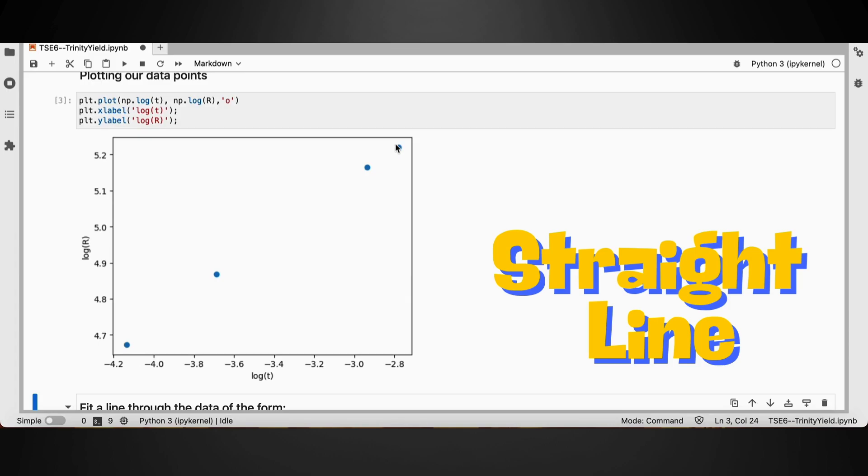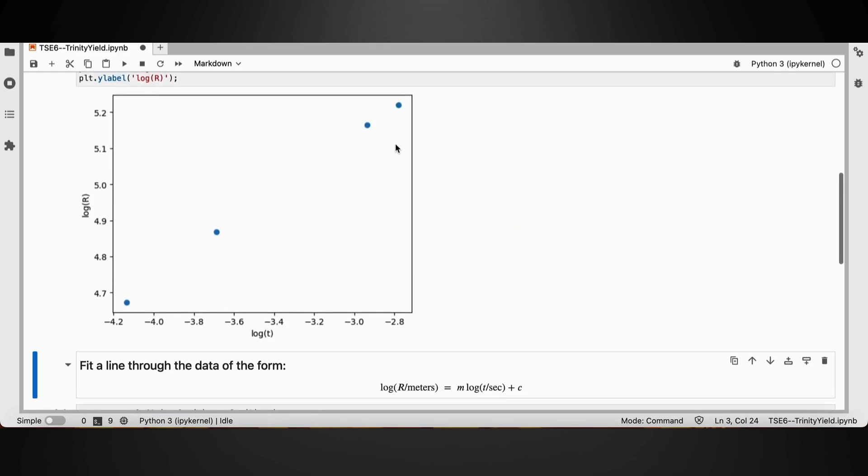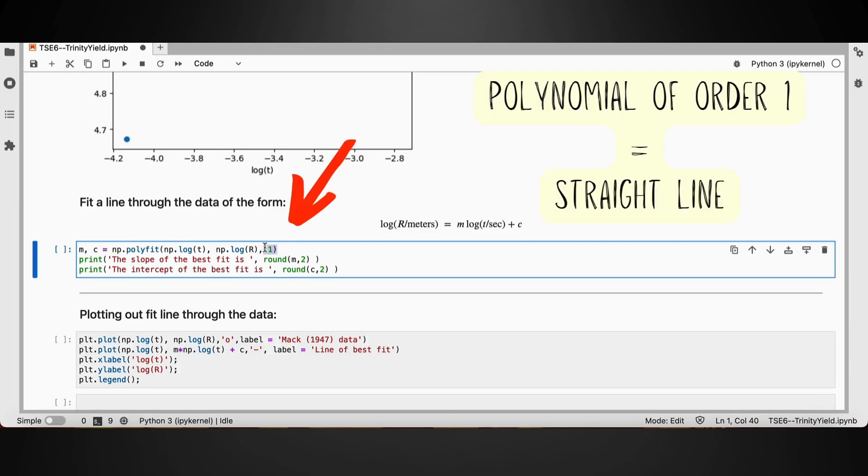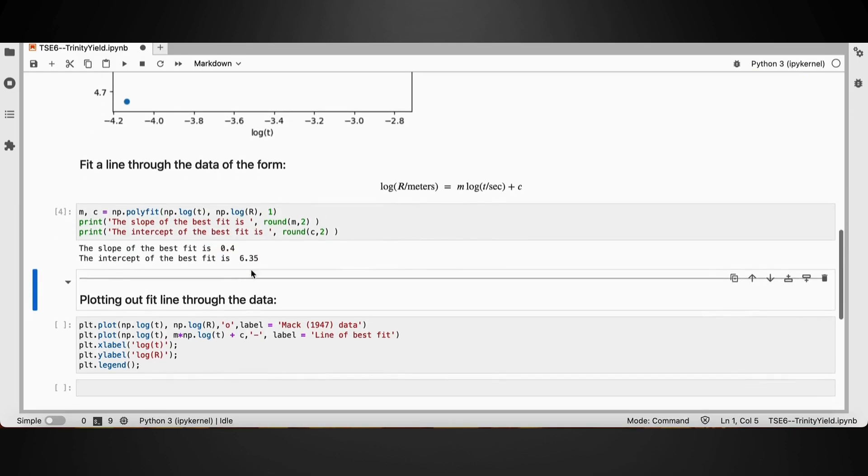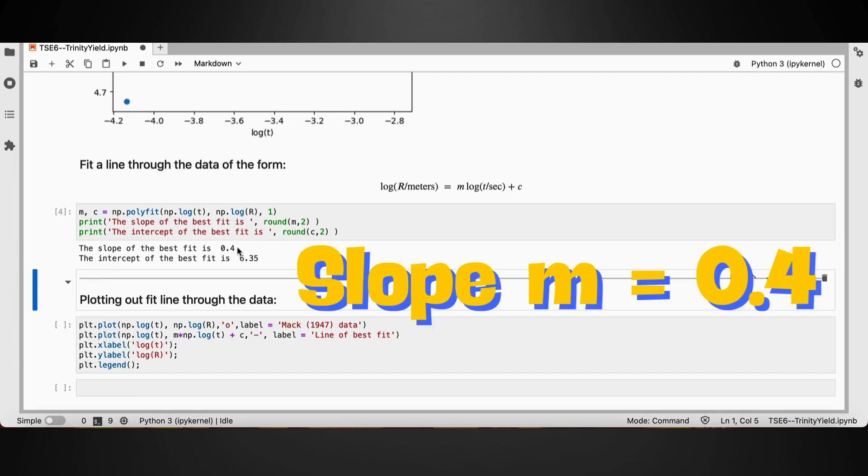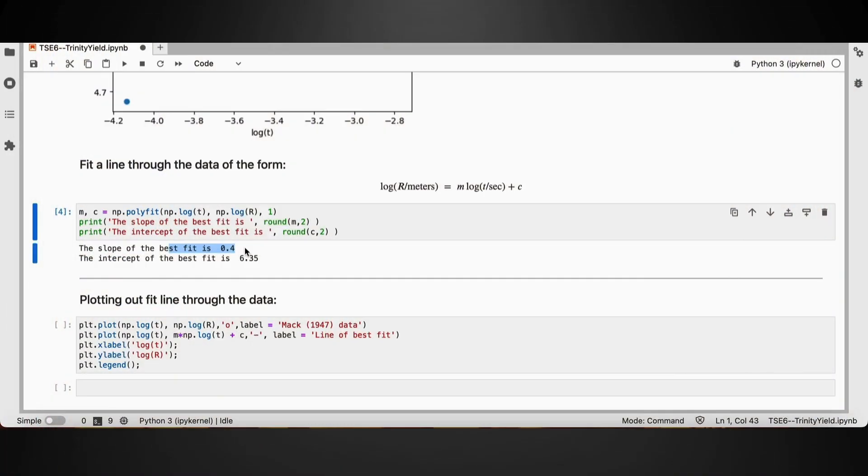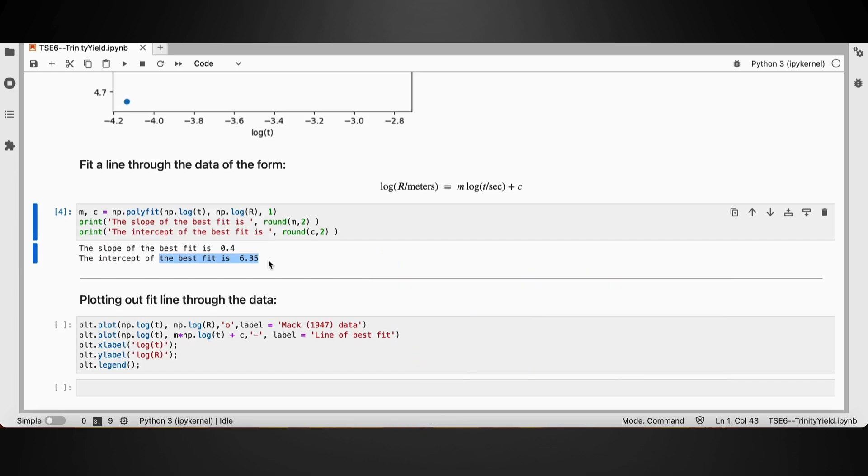Now we just need to find the line of best fit through this data, for which I am using NumPy's polyfit module, which basically fits a polynomial and I'm asking it to fit a polynomial of order 1, which is a straight line to our variables log r versus log t. It returns the slope and intercept of the best fit. And there you go. Look at that. The slope of the best fit comes out to be 0.4, which is exactly 2/5 as predicted. The intercept of the best fit C can also be read off to be 6.35 and carries essential information about the energy of the blast wave.